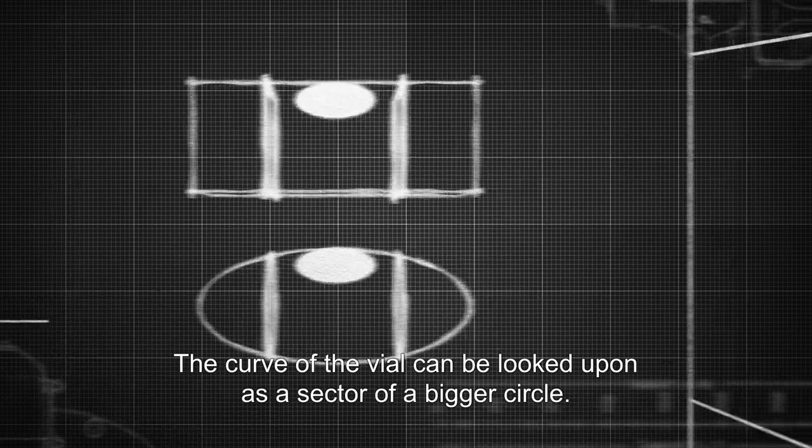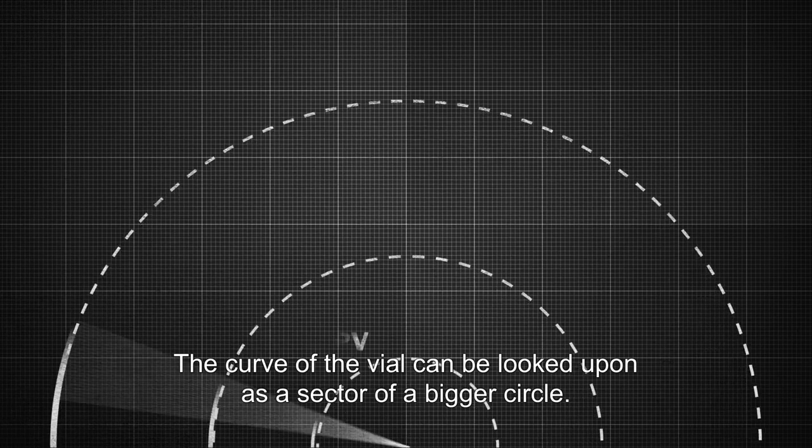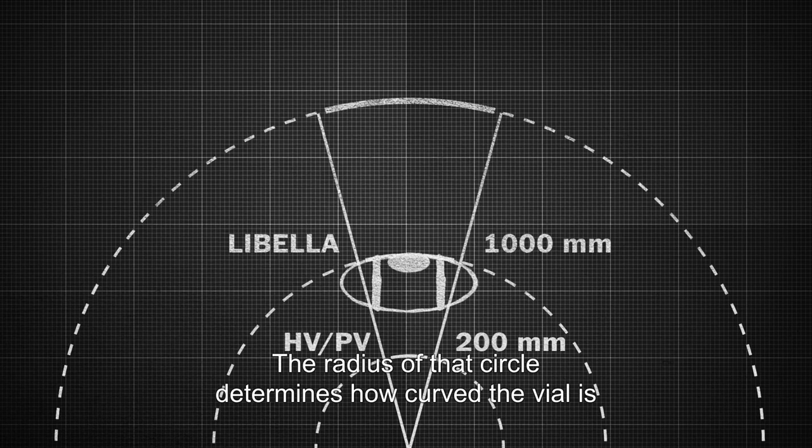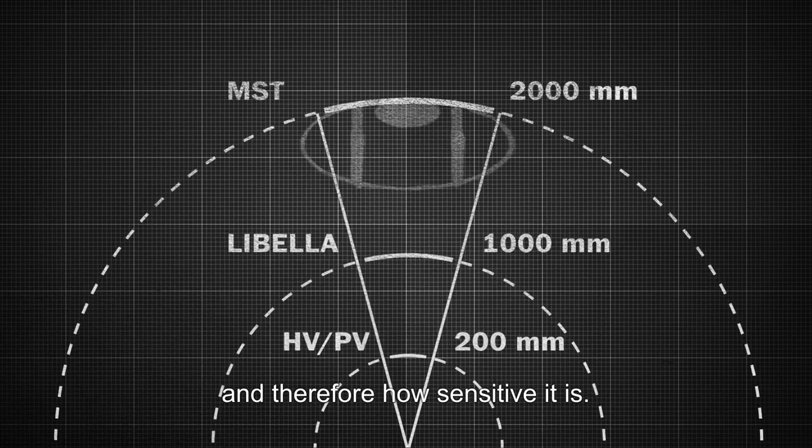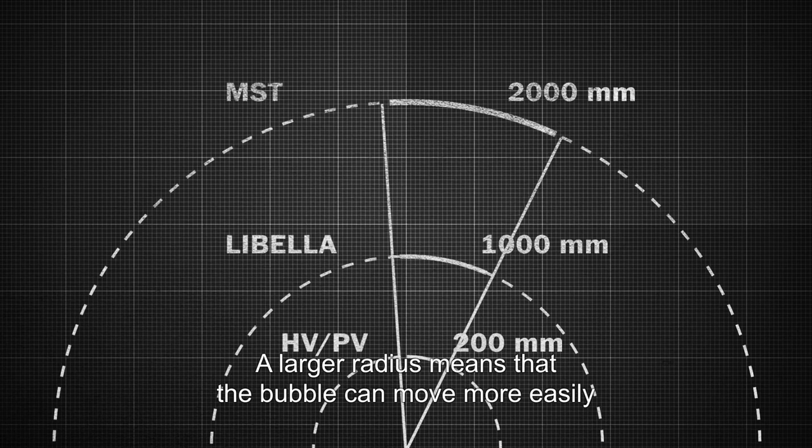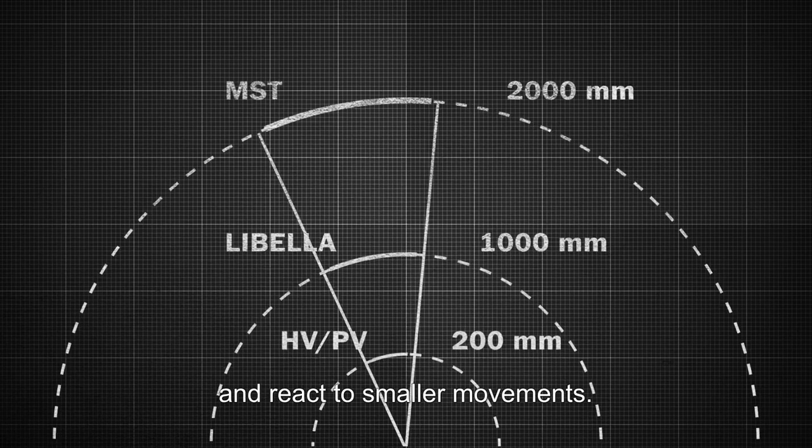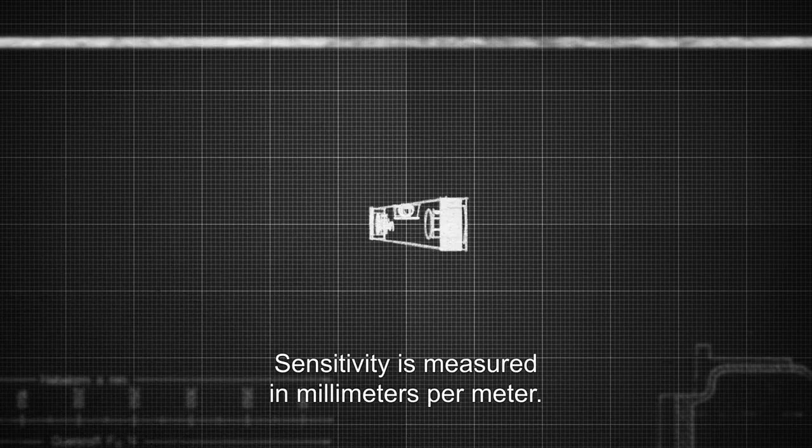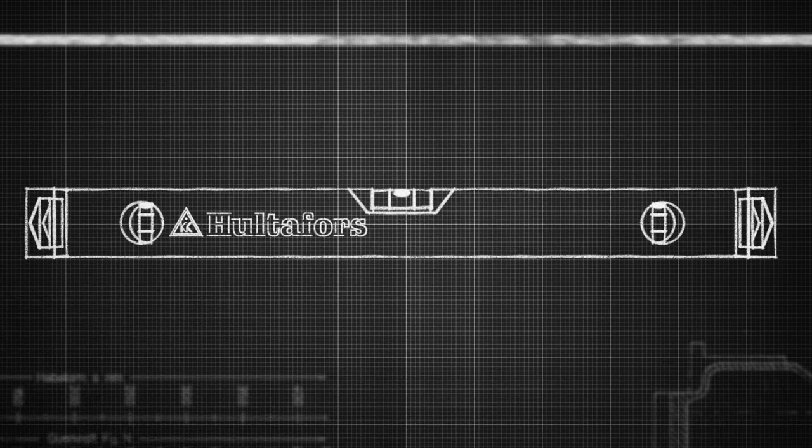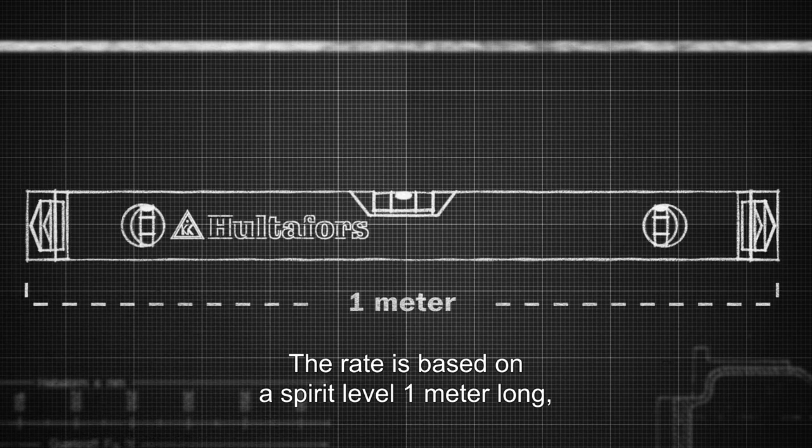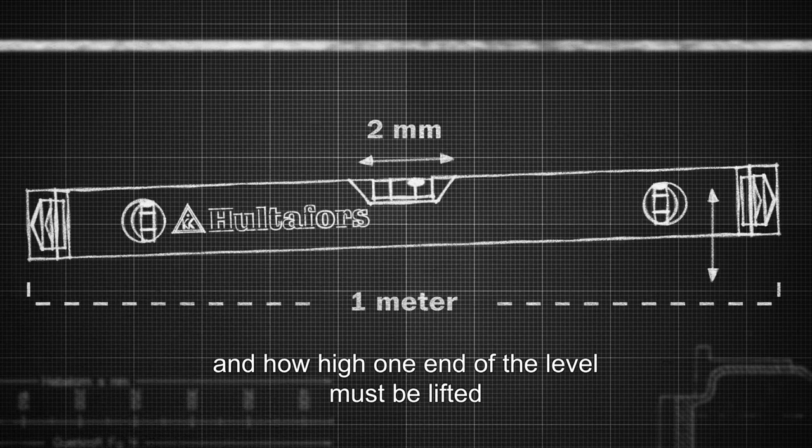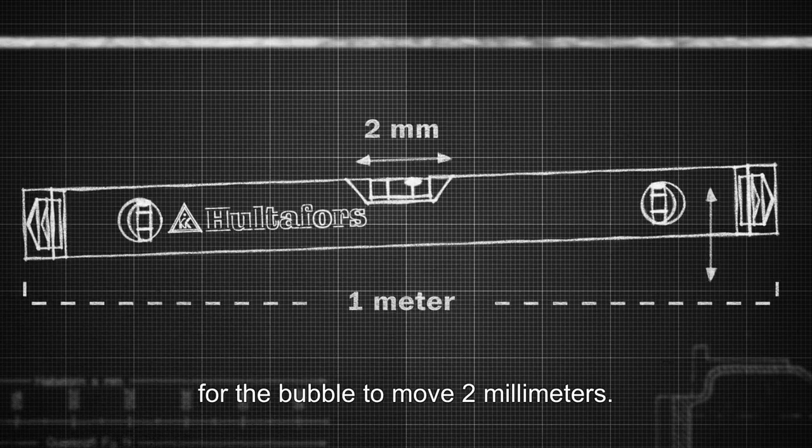The curve of the vial can be looked upon as a sector of a bigger circle. The radius of that circle determines how curved the vial is, and therefore, how sensitive it is. A larger radius means that the bubble can move more easily and reacts to smaller movements. Sensitivity is measured in millimeters per meter. The rate is based on a spirit level one meter long, and how high one end of the level must be lifted for the bubble to move two millimeters.